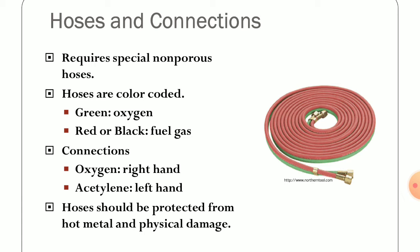Hoses are color-coded, which we must remember. Both cylinders have hoses represented with different colors, just as the cylinders themselves are in different colors. The oxygen hose is painted green, whereas the fuel gas — acetylene — hose is represented by red or black color. Their connections also differ: the oxygen hose has a right-hand thread, whereas the acetylene hose has a left-hand thread. Hoses must be protected from hot metal and physical damage.